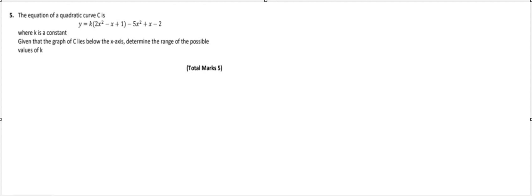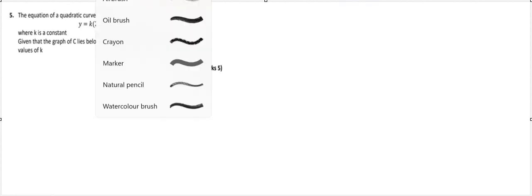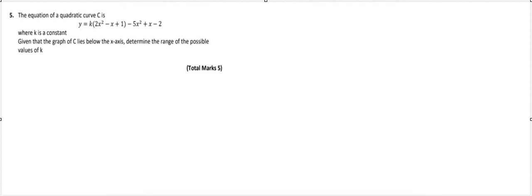Right, so here's a quadratic question. We've got a curve C, and C is defined as y equals k times 2x squared minus x squared, all of this. This is all one single curve C. So what we've got is lots of different terms. We need to collect together our like terms.